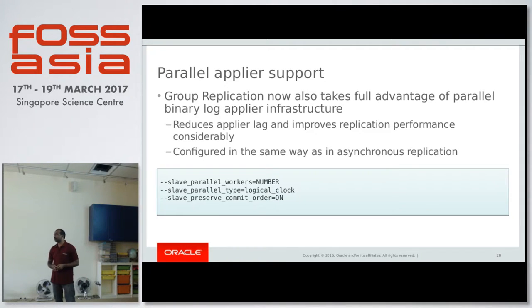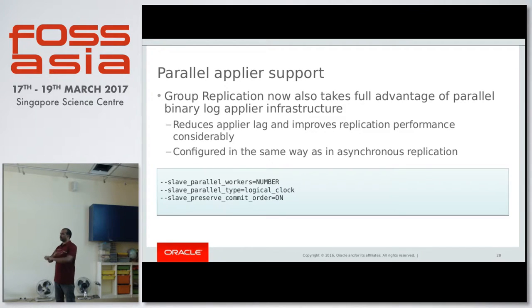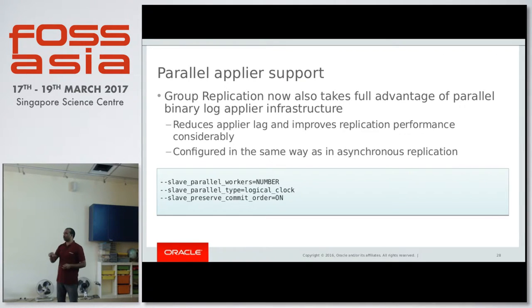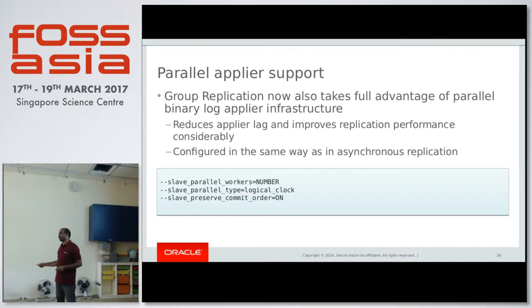These parallel parameters have to be set on which node? In group replication, there is no master or slave — everything is just one node, everything is a master. So if you want to enable it on one particular node, you set these settings on that node. If you want it on other nodes as well, you have to set these things on all the nodes where you want better performance from the applier.